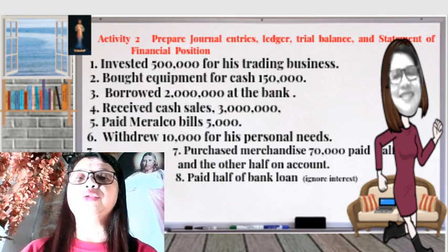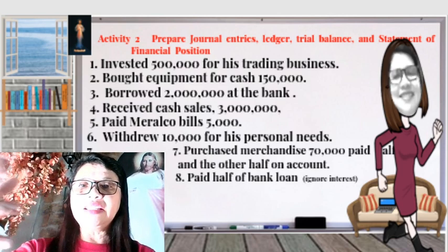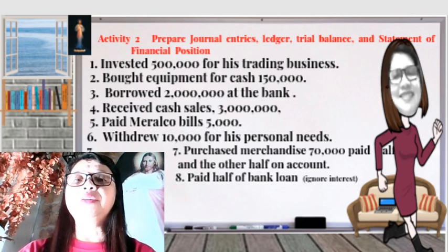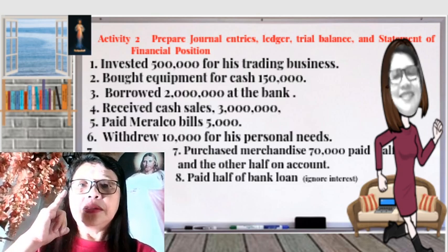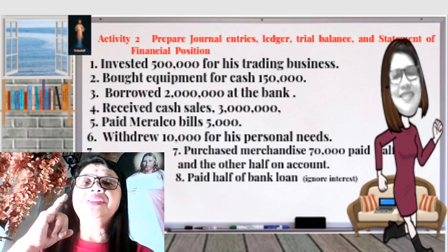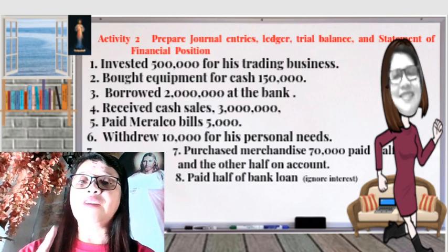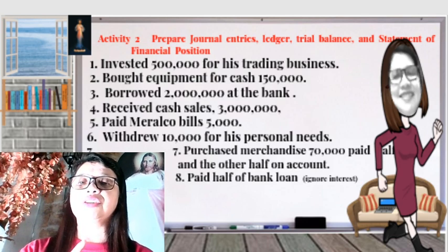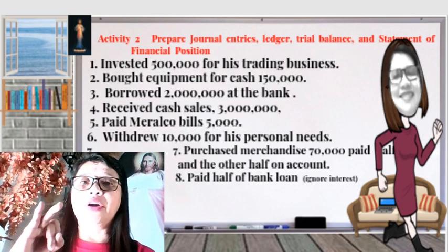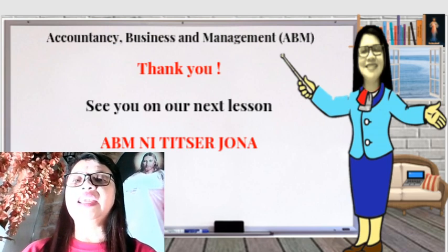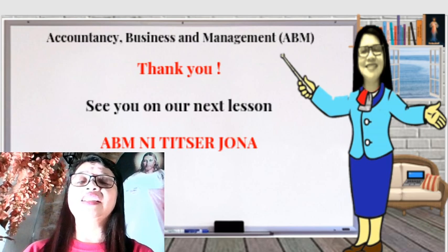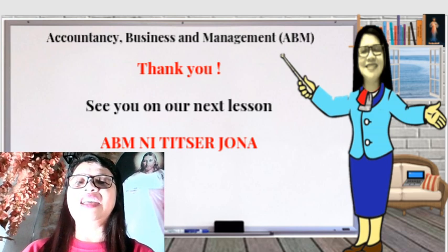I'm leaving here Activity 2, where you will be guided by the same problem given earlier. You can submit this in our Google Classroom. You will do the journal entries, the ledger, the trial balance, and finally the statement of financial position in account form and in report form. That ends our lesson for today. Thank you so much. See you on our next lesson. Always at your service, ABM — Teacher Jonna. God bless everyone.